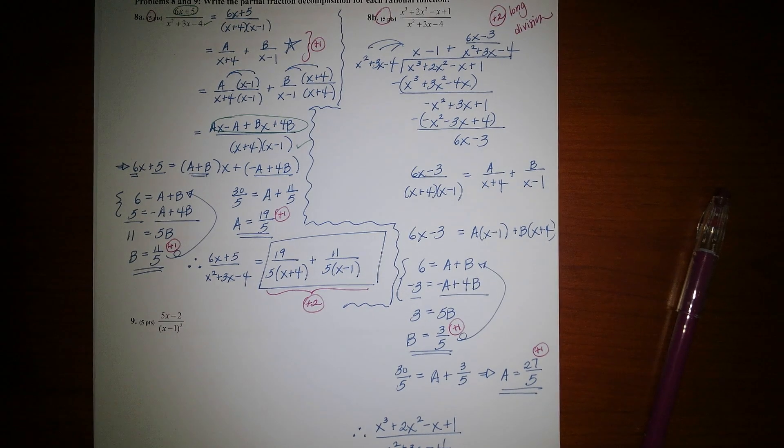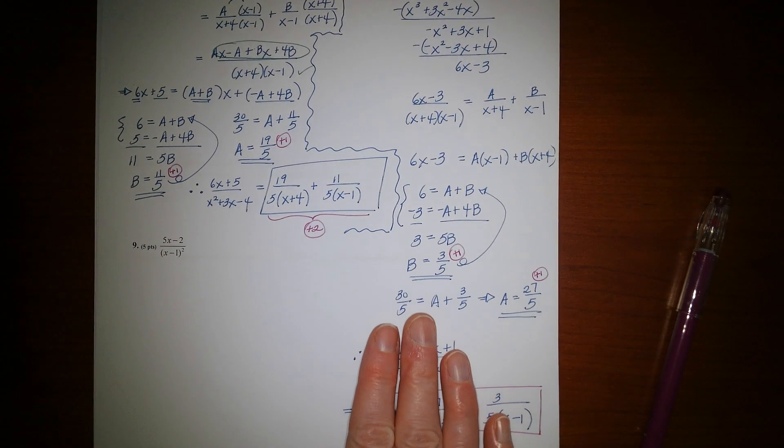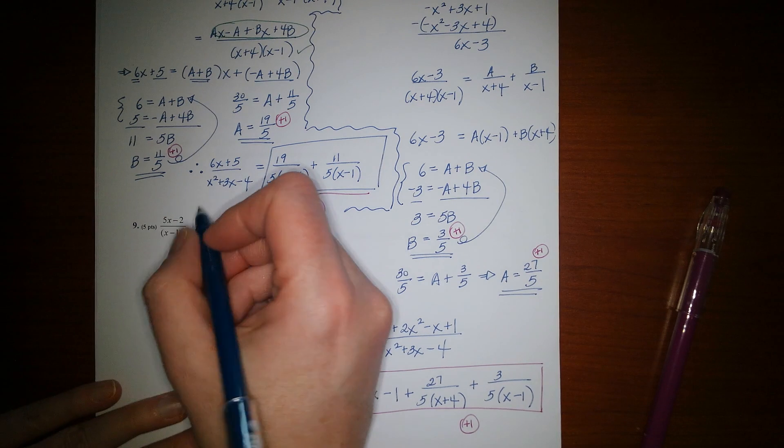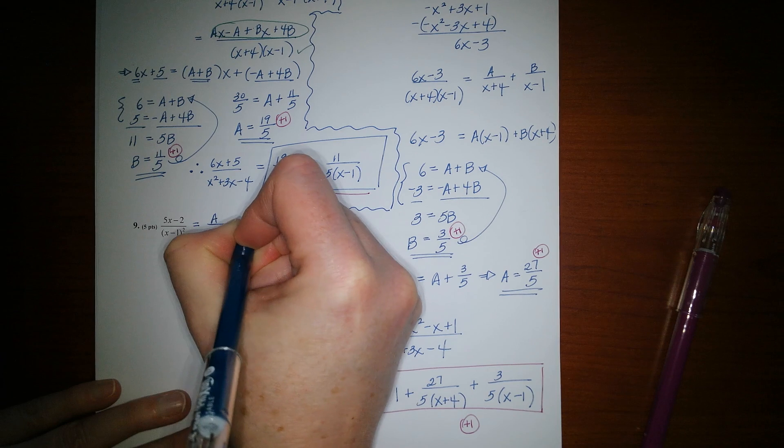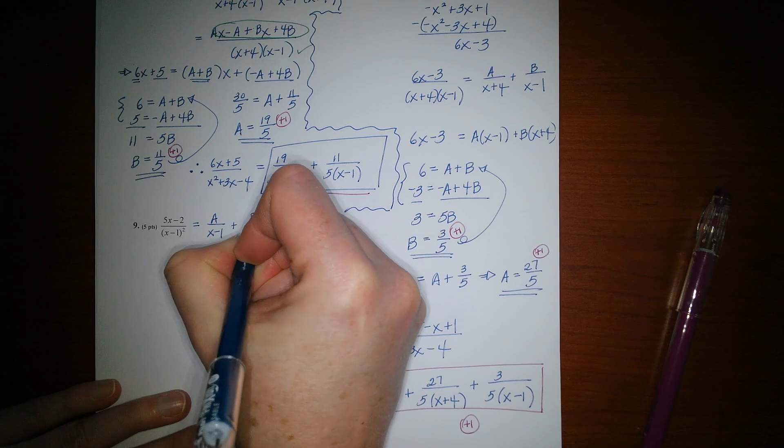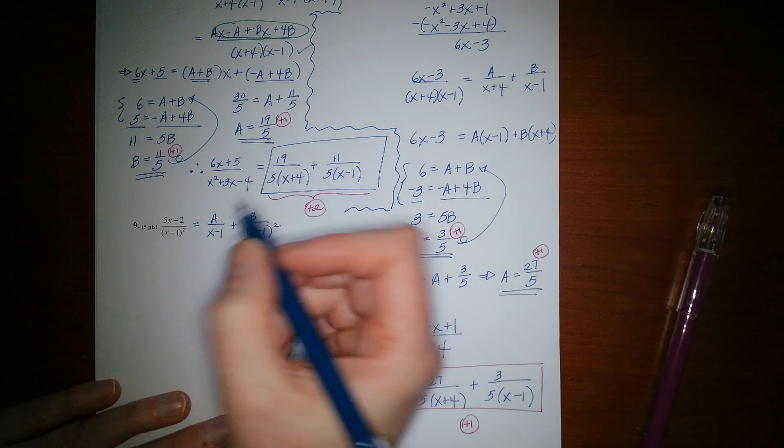All right. Last one. Let's just go ahead and take care of it right now, shall we? All right. So for this one, first for the form, you'd have a over x minus 1 plus b over x minus 1 squared, since you had that repeated linear factor.